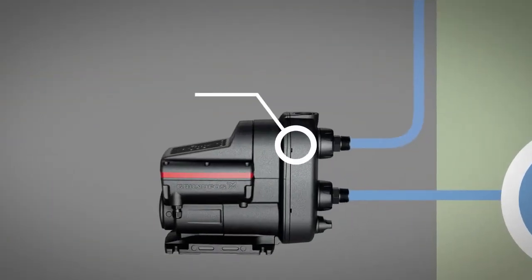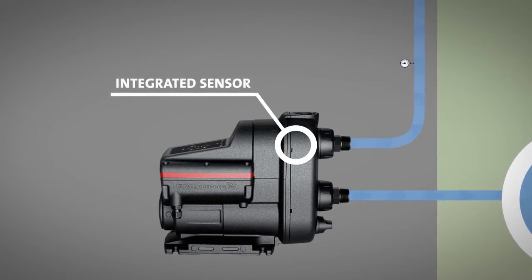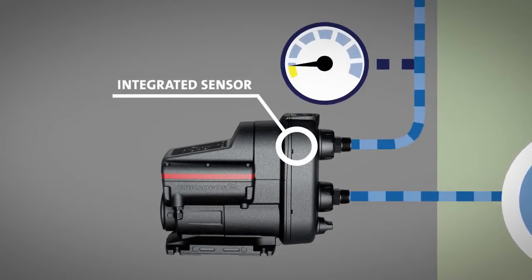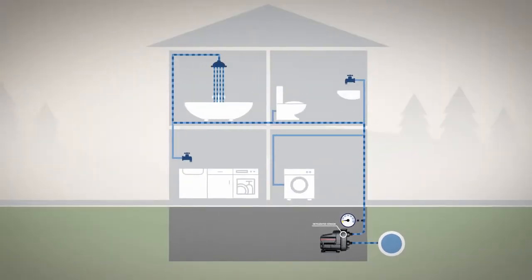Scala 2 is equipped with an integrated sensor that measures the water pressure delivered by the pump to the tap, for instance the shower.